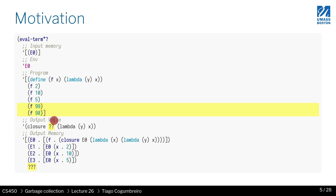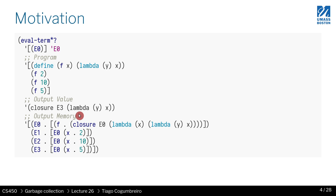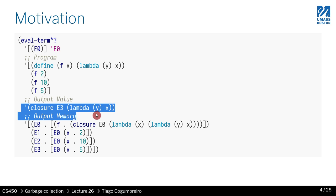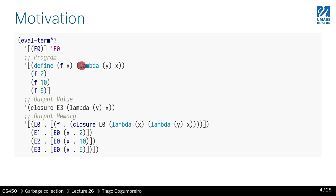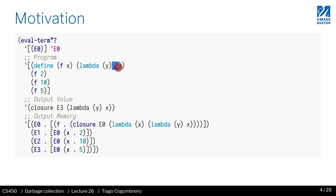So if I do two more calls, what do you think should happen? If I evaluate all of these calls — notice that the output value is closure E3, because it's the function that returns from calling f(5). You'll realize it's a closure that points to E3, where x is assigned to 5. Therefore, this x will be 5.